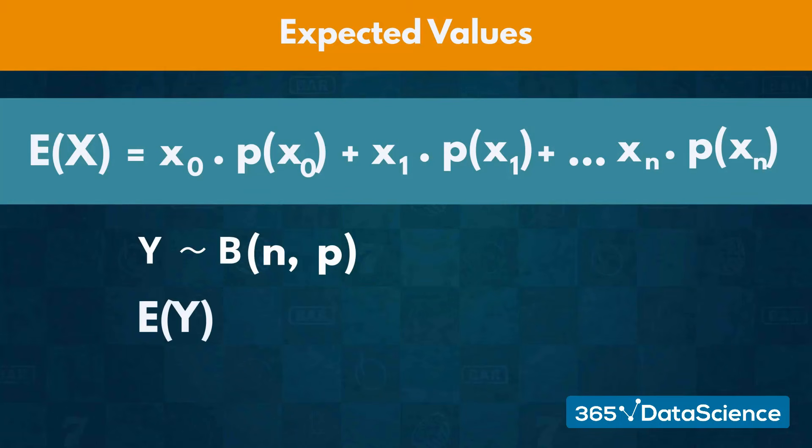The expected value formula for a binomial event equals the probability of success for a given value, multiplied by the number of trials we carry out.